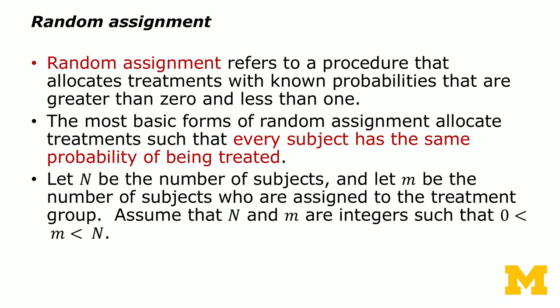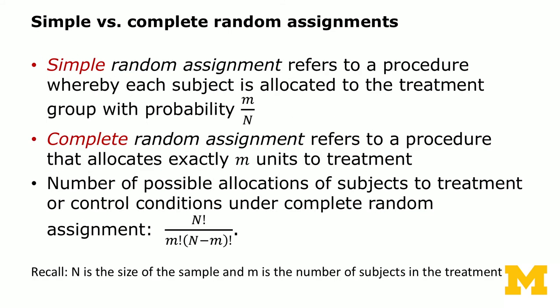Random assignment refers to a procedure that allocates treatments with known probabilities greater than zero and less than one. The most basic form allocates treatments such that every subject has the same probability of being treated. With n subjects and m assigned to the treatment group, we can distinguish two forms: simple random assignment, where each subject is allocated to the treatment group with probability m over n; and complete random assignment, which allocates exactly m units to treatment. The number of possible allocations under complete random assignment is n factorial over m factorial times (n minus m) factorial.